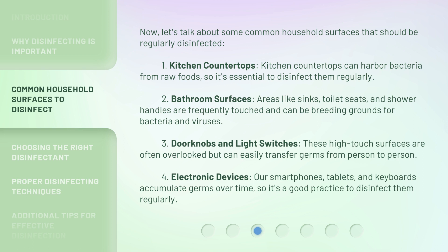1. Kitchen countertops: kitchen countertops can harbor bacteria from raw foods, so it's essential to disinfect them regularly. 2. Bathroom surfaces: areas like sinks, toilet seats, and shower handles are frequently touched and can be breeding grounds for bacteria and viruses.